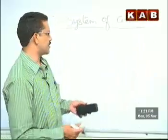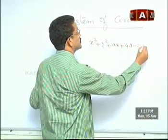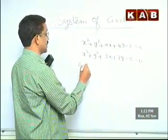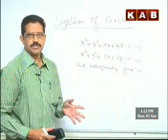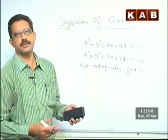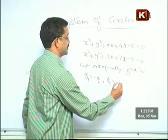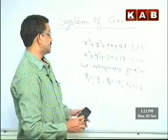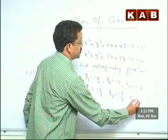Here is an example: If x² + y² + Ax + 4y - 2 = 0 and x² + y² + 3x + 7y - 5 = 0 cut orthogonally, find A. From the first circle: G1 = -A/2, F1 = -2, C1 = -2. From the second circle: G2 = -3/2, F2 = -7/2, C2 = -5.